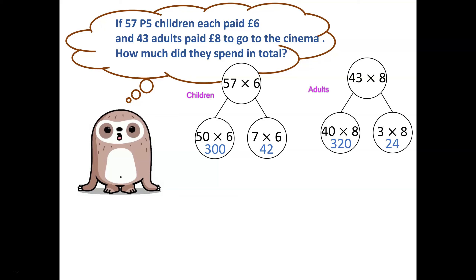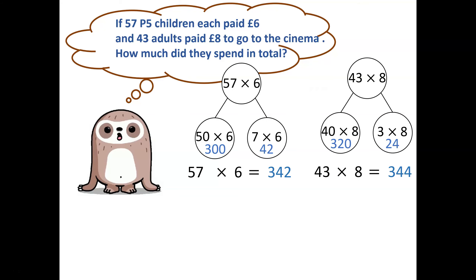The second part-whole model shows us the calculation needed to find out how much the adults spent. Forty-three times eight is partitioned into its tens and ones: forty multiplied by eight and three times eight. Always start with the ones value. Three times eight is twenty-four. Forty times eight is three hundred and twenty. So altogether, fifty-seven times six is three hundred and forty-two, and forty-three times eight is three hundred and forty-four.